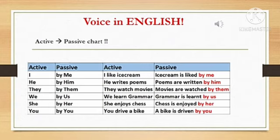The next pronoun is he — by passive conversion we use by him. For example, the active sentence: He writes a poem. By passive conversion: A poem is written by him. The next one is they — by passive conversion we use by them. For example: They watch movies. By passive conversion: Movies are watched by them.